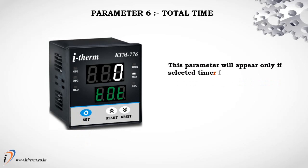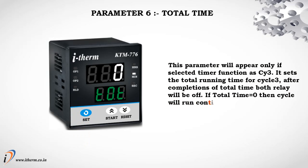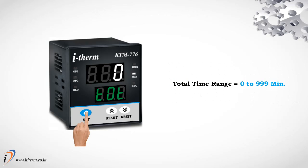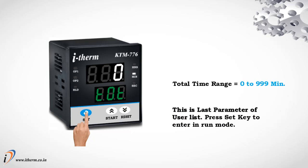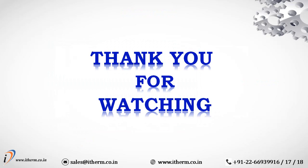Parameter 6: Total Time. This parameter appears only if the timer function is Cycle 3. It sets the total running time for Cycle 3. After completion of total time, both relays will turn off. If Total Time equals 0, the cycle runs continuously until a reset pulse. Total Time range: 0 to 999 minutes. This is the last parameter of the User List. Press Set key to enter Run Mode. Thank you for watching.